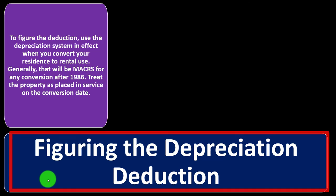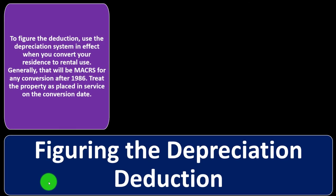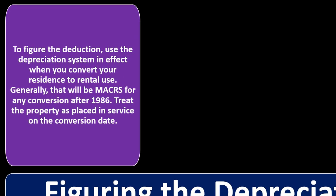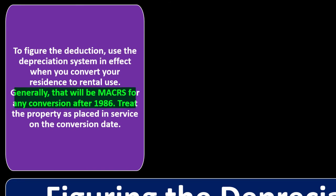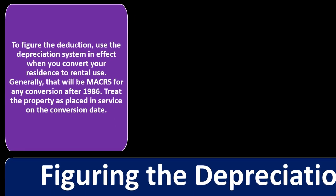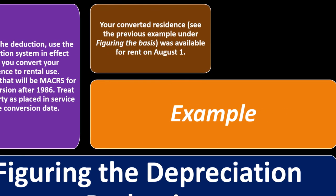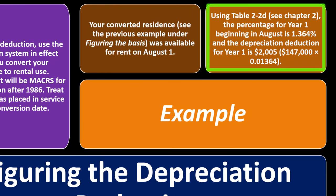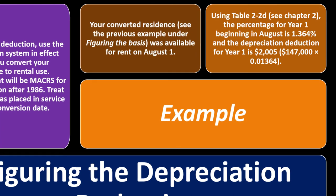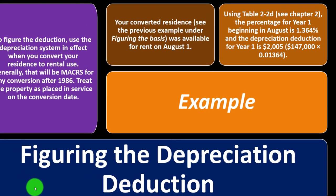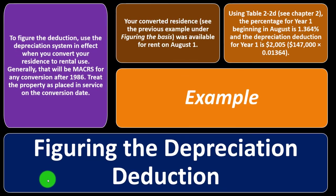Figuring the depreciation deduction: Use the depreciation system in effect when you convert your residence to rental use — generally MACRS for any conversion after 1986. Treat the property as placed in service on the conversion date. Example: Using the previous example, the property was available for rent on August 1st. Using Table 2-2D from Chapter 2, the percentage for Year 1 beginning in August is 1.364%. The depreciation deduction for Year 1 is $2,005, which is $147,000 × 0.01364.